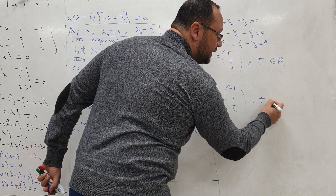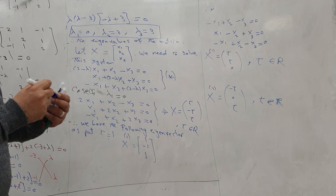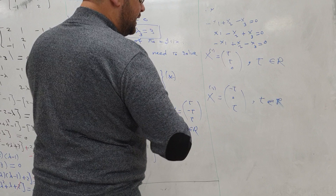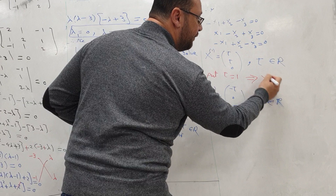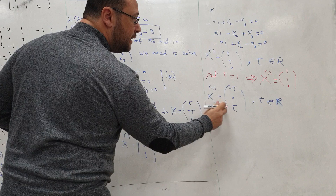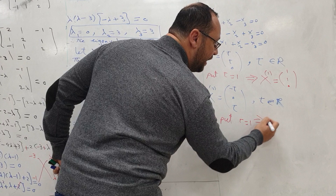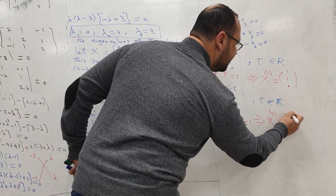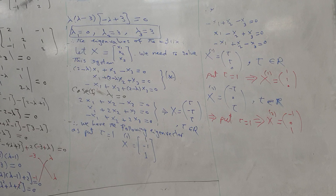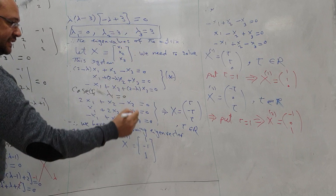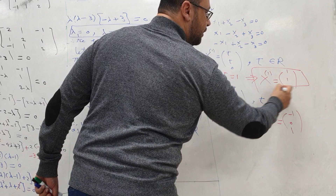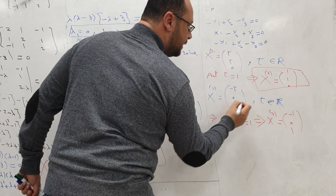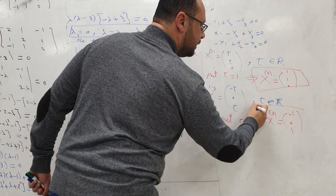If we put t equal 1, we have the eigenvector [1, 1, 0]. If we put t equal 1 in the second form, we have the eigenvector [minus 1, 0, 1]. So now we have three eigenvectors corresponding to the three eigenvalues: the first eigenvector [1, minus 1, 1] for lambda=0, the second eigenvector [1, 1, 0], and the third eigenvector [minus 1, 0, 1], both for lambda=3. Thank you very much.